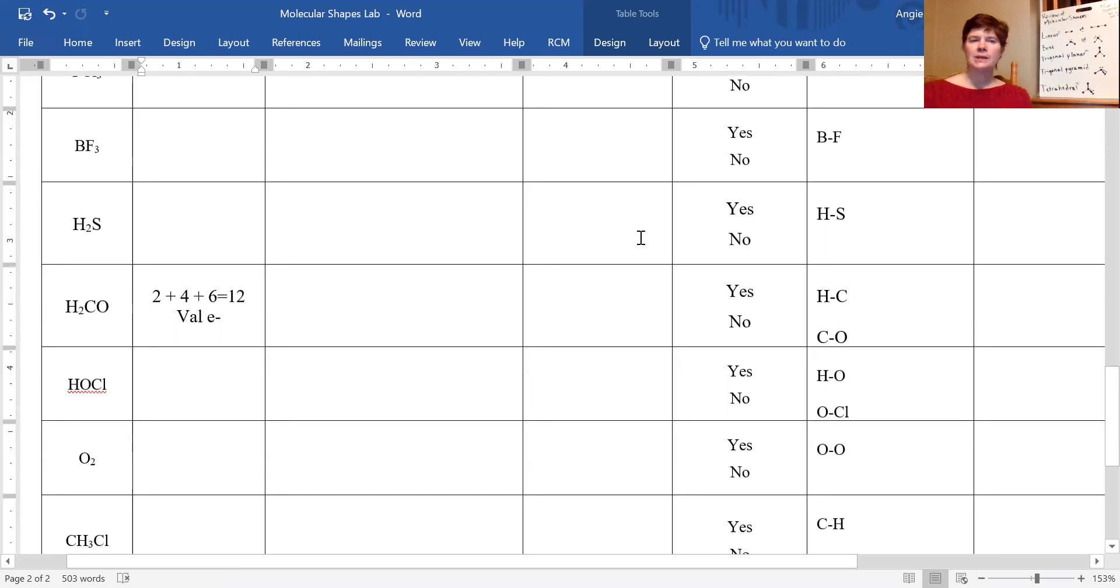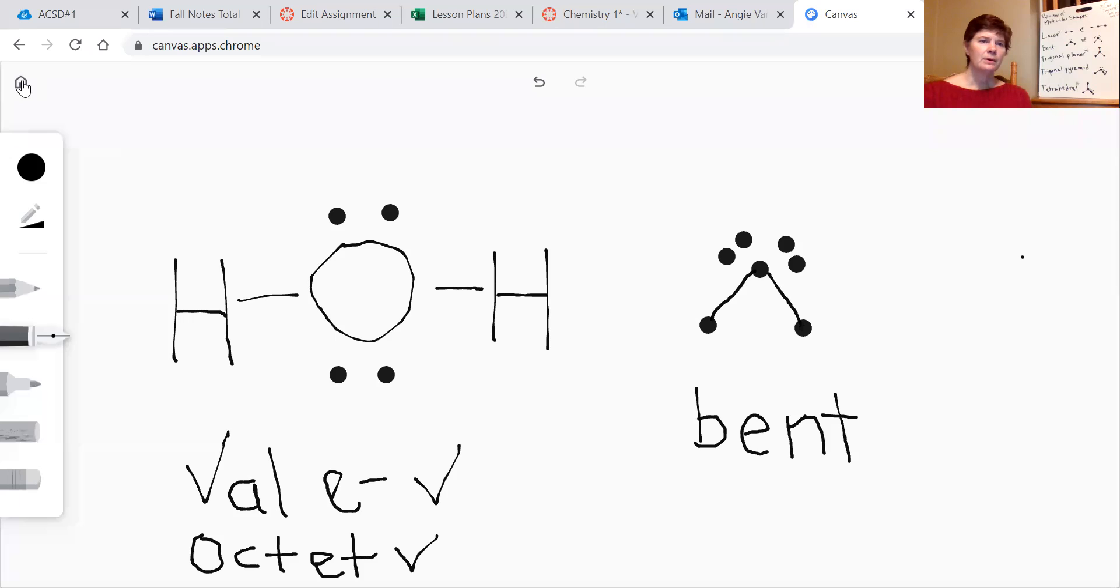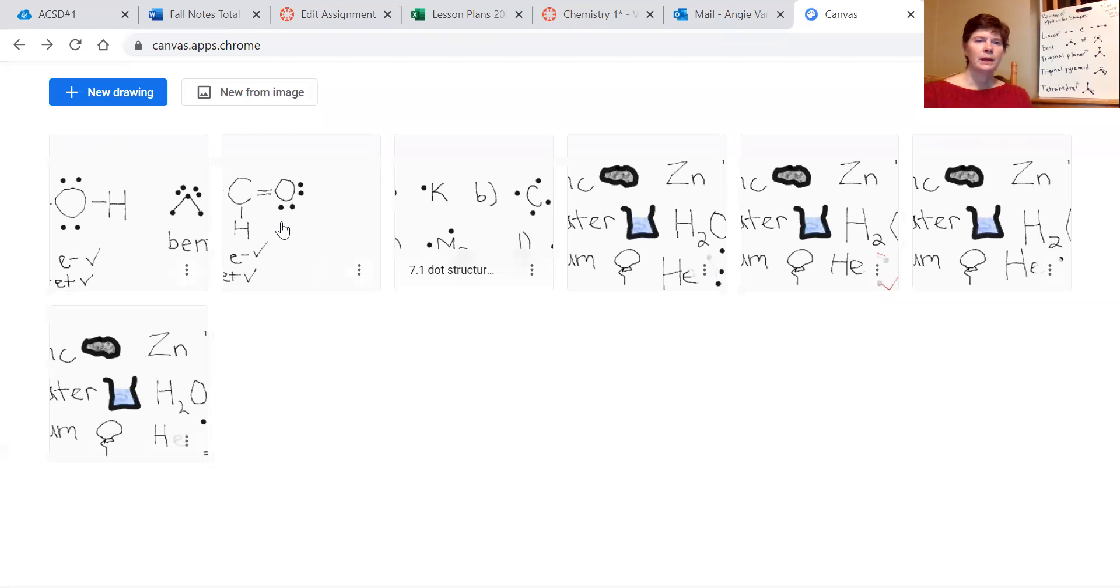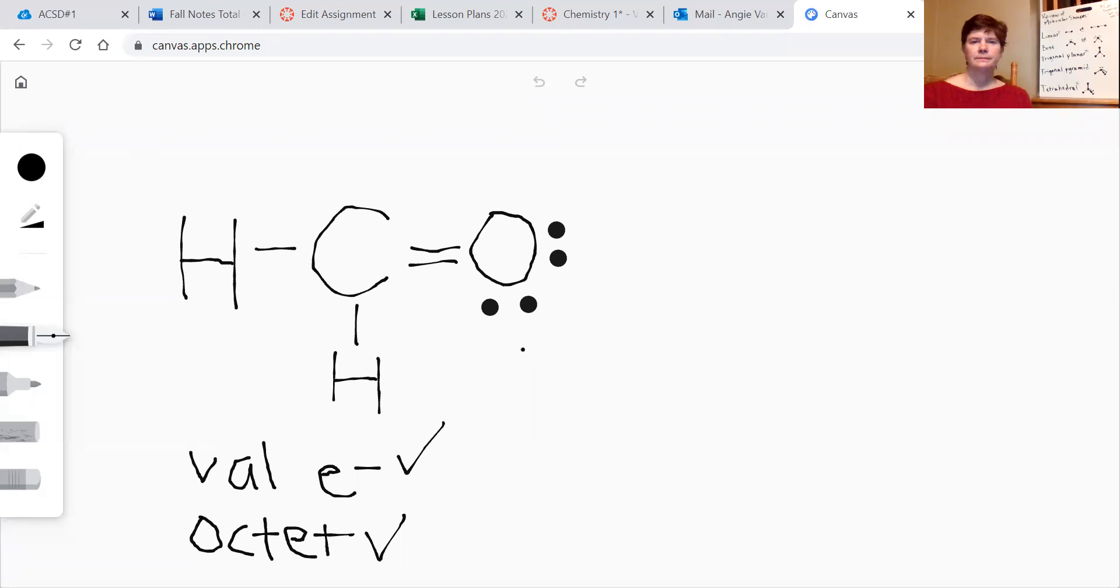Let's look at our H2CO. We've already done columns 1 and 2. So it has 12 valence electrons. You should have the structure drawn here and done the checks. Now we're going to come up with a shape for the molecule and determine if it's symmetrical or not. So let me go back to the drawing that we have for that.